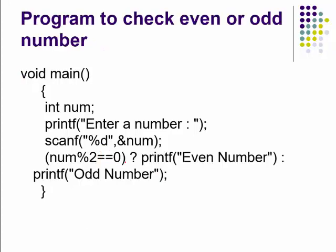The same thing can be done using the conditional operator. We write the condition: number mod 2 equals zero. If that is true, we printf 'even number'; after the colon operator, we printf 'odd number'. The first part is your true part and the second part is your false part, and the appropriate statement is executed depending on the condition.